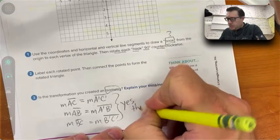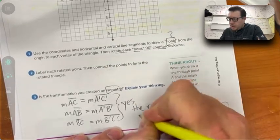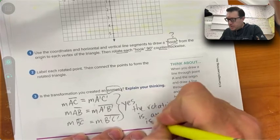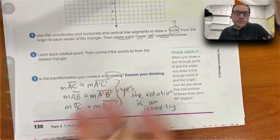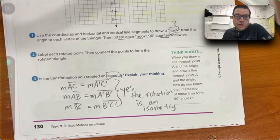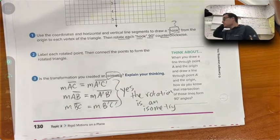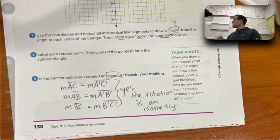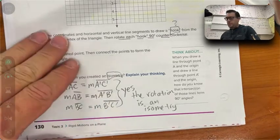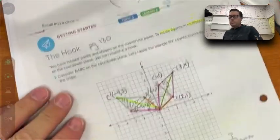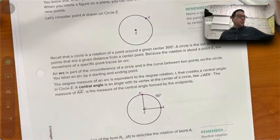For this reason, yes, the rotation is an isometry. Isometry means the transformation keeps the same size.